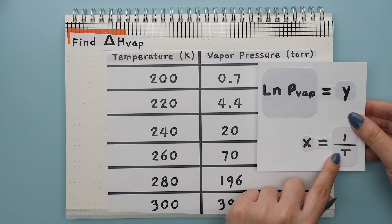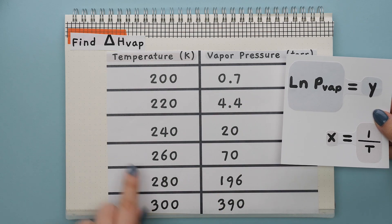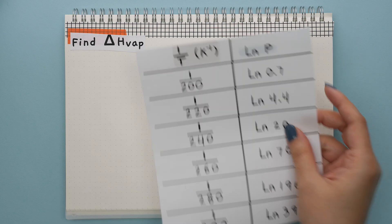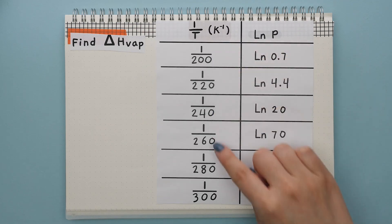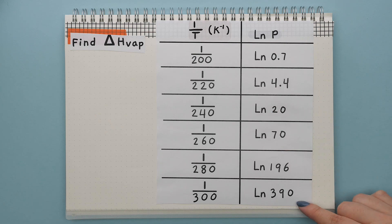and x is equal to 1 divided by t, which is the temperature, we first need to change each one of these values. All temperatures must be in this form, where we will divide one by each temperature and we will take the ln of each vapor pressure.